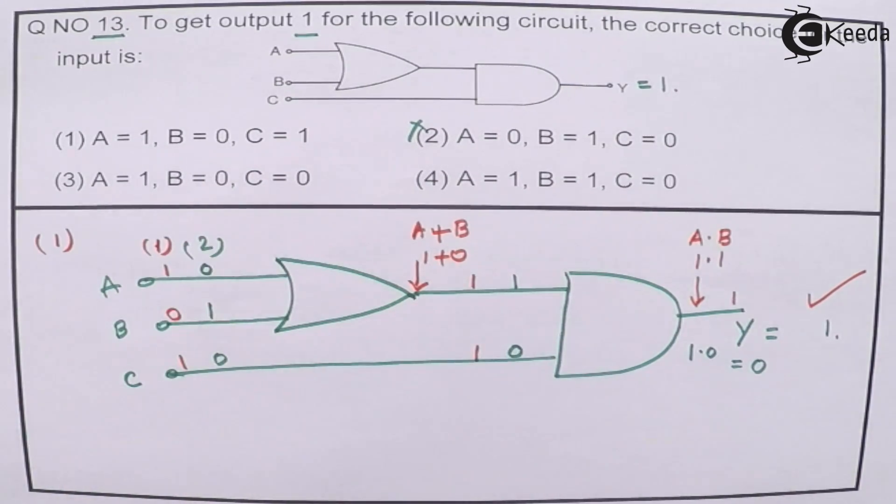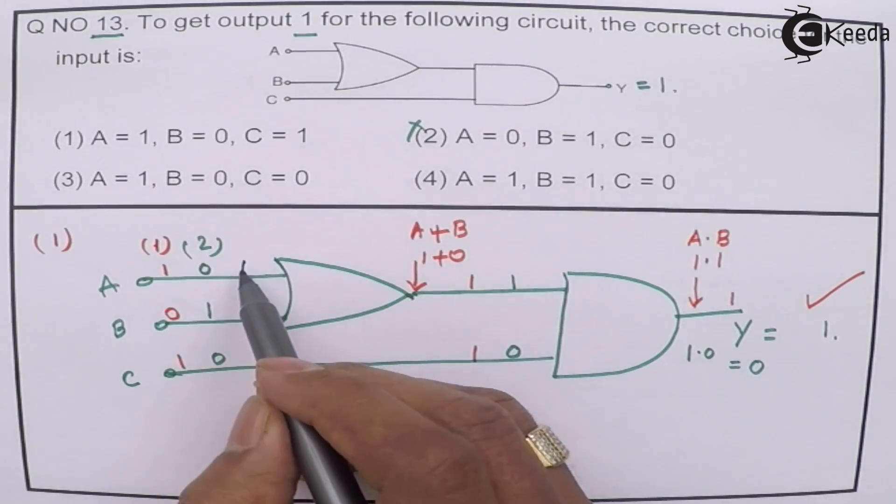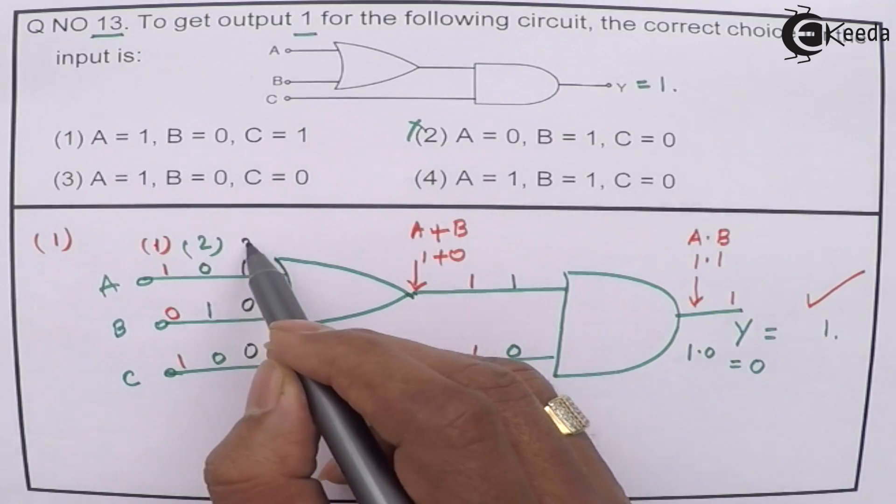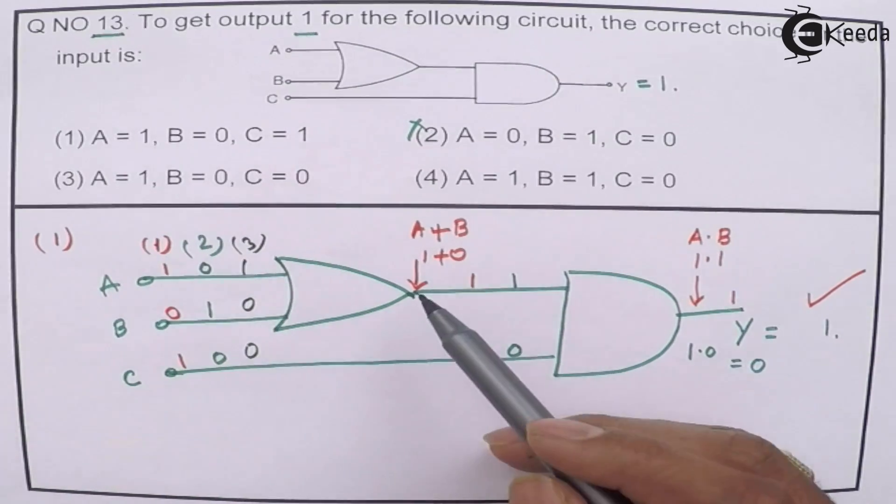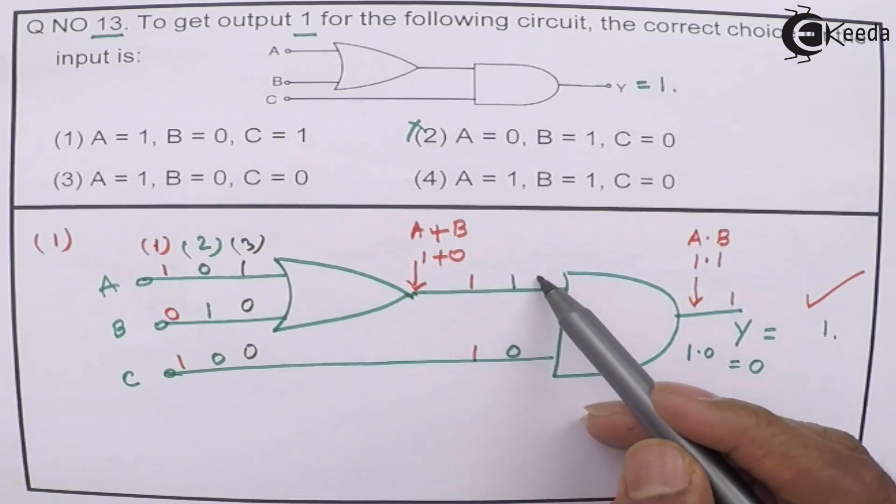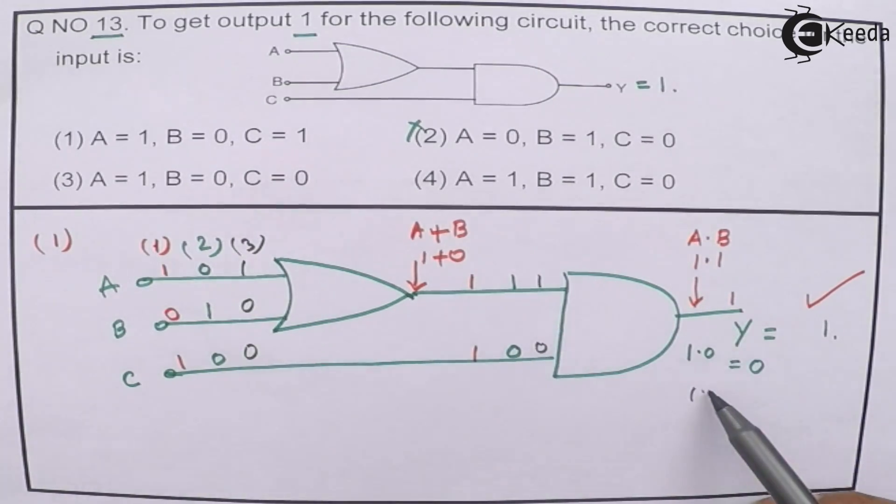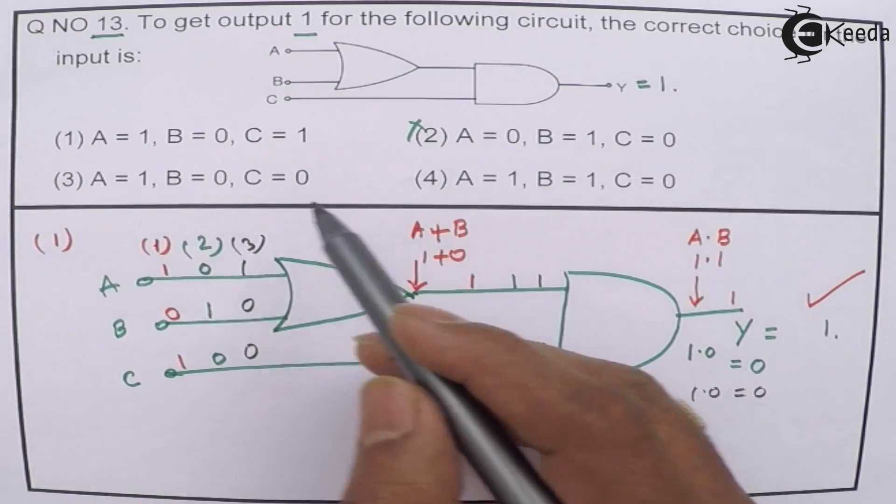Option 3 is 1, 0, 0. Again it is 1, 0, so the OR output will be 1 here. C is 0. Anything dot 0, the outcome will also be 0. So this is not the option.